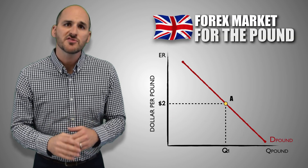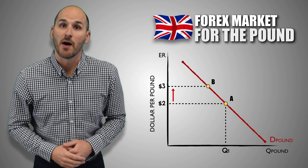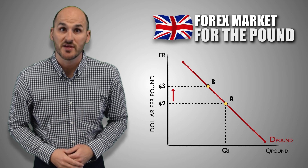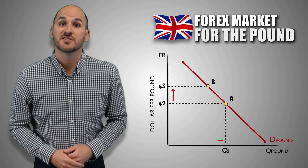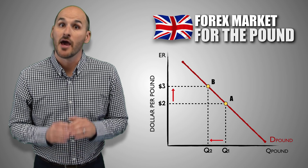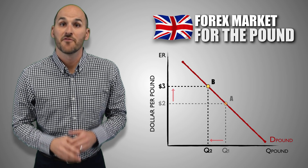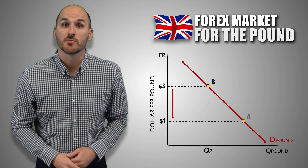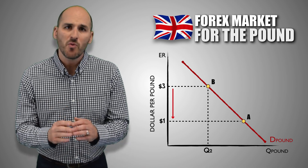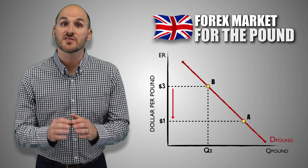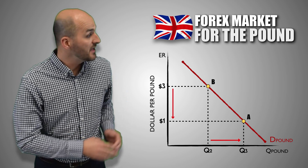For example, let's assume that the exchange rate for one British pound increases from two US dollars to three US dollars. American consumers who buy British imports will have to give up a greater quantity of US dollars in the exchange, so they'll want to avoid paying a higher price to convert the currency. This causes a decrease in the quantity of British pounds demanded, and a movement along the foreign exchange demand curve from point A to point B. If the exchange rate for one British pound falls to one dollar, American consumers won't have to give up as much of their own currency, and they'll want to take advantage of the lower price. This causes an increase in the quantity of British pounds demanded, and a movement along the foreign exchange demand curve from point B to point A.